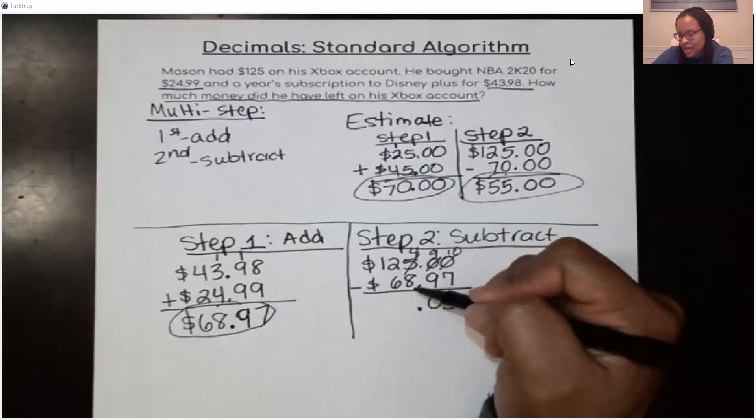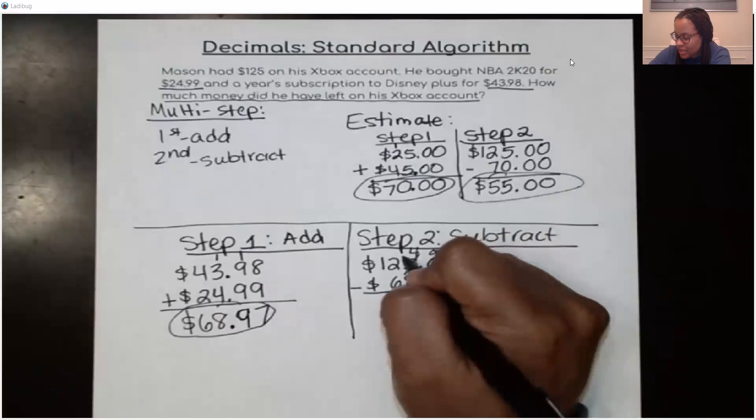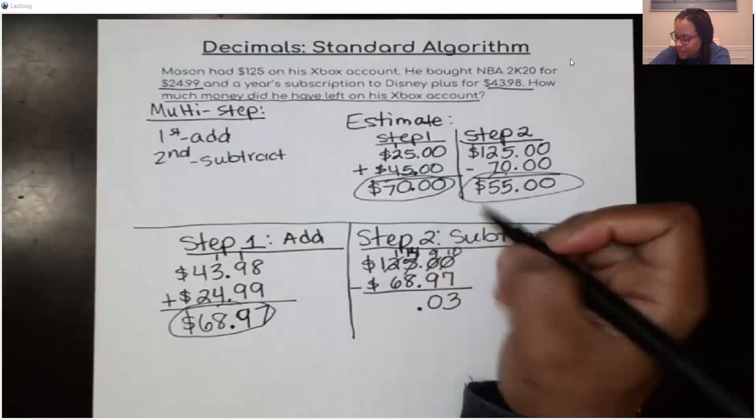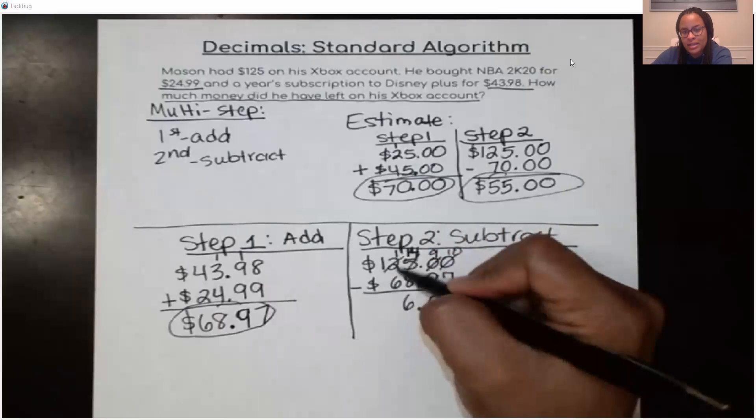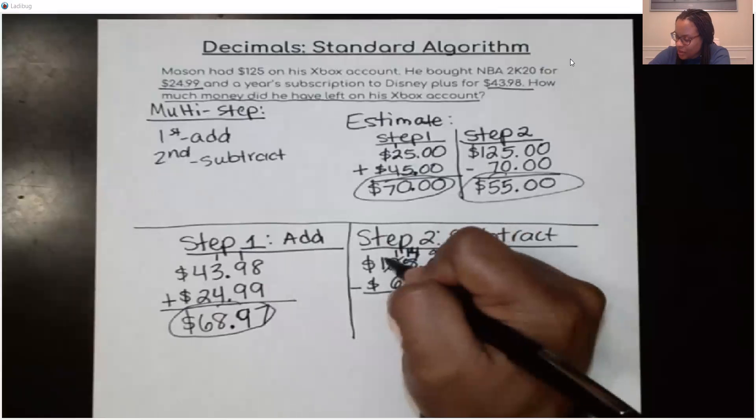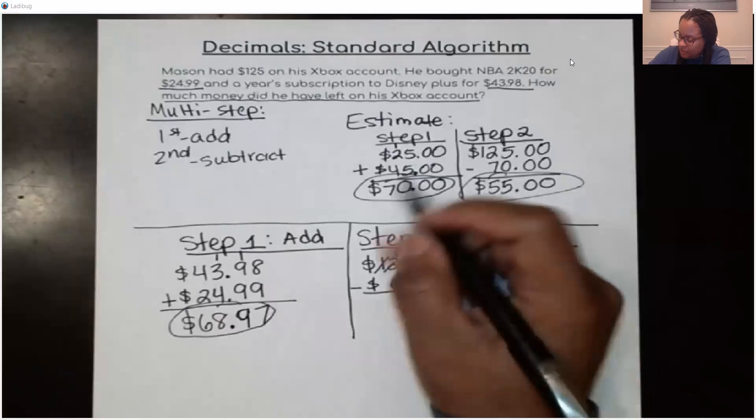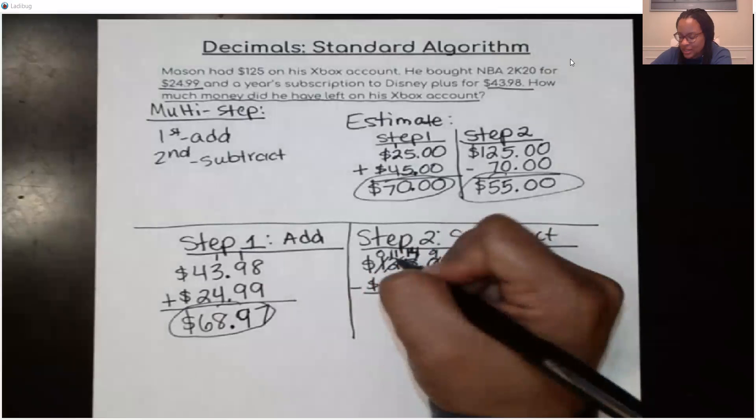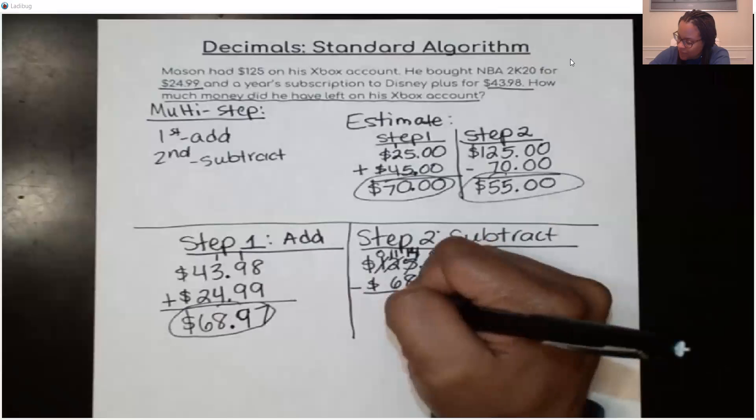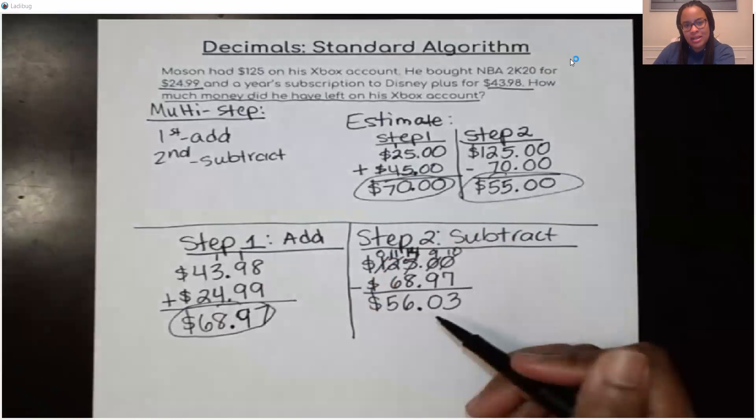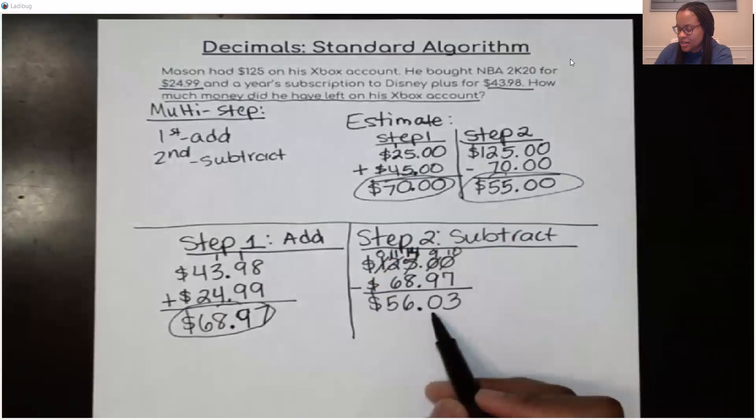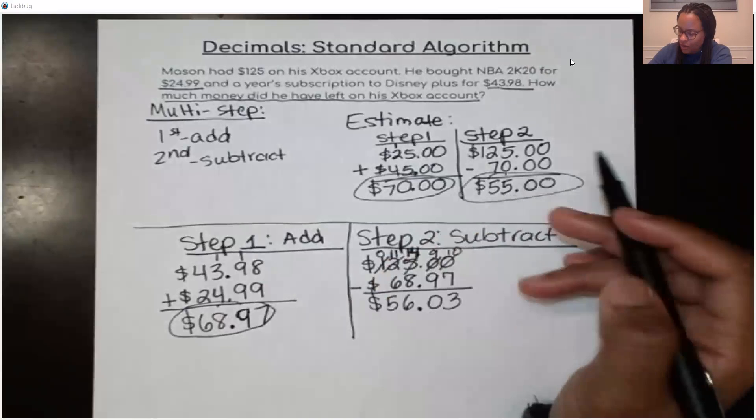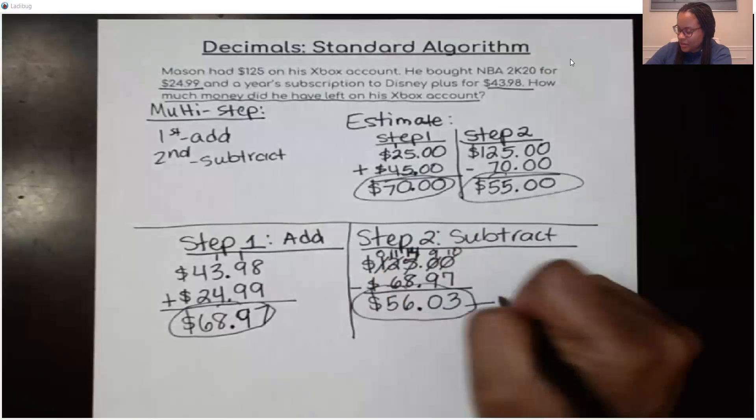4 minus 8. I'm not going to be able to do that. So I need to borrow a 10 again. So I'm going to cross out this 2 and make it a 1. Bring this 10 over here to this side to make it a 14. 14 minus 8 is 6. Now, 1 minus 6. I'm not going to be able to do that either. So I'm going to have to cross out this number over here in the 100ths place and make it a 0. And then take that 10 that I just borrowed and put it over here on this side. So 11 minus 6 is 5. Bring down my dollar sign. Now, let me stop and think. It's $56. Close to $55. Yeah. That's pretty close. So this is my final answer right here.